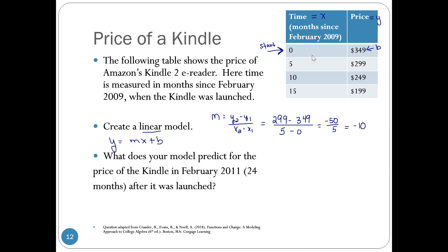If I look at the labels up here, this is going down by 10 each month at the beginning of having the Kindle. So then I put those numbers into my formula: y equals negative 10x plus the starting price of 349.